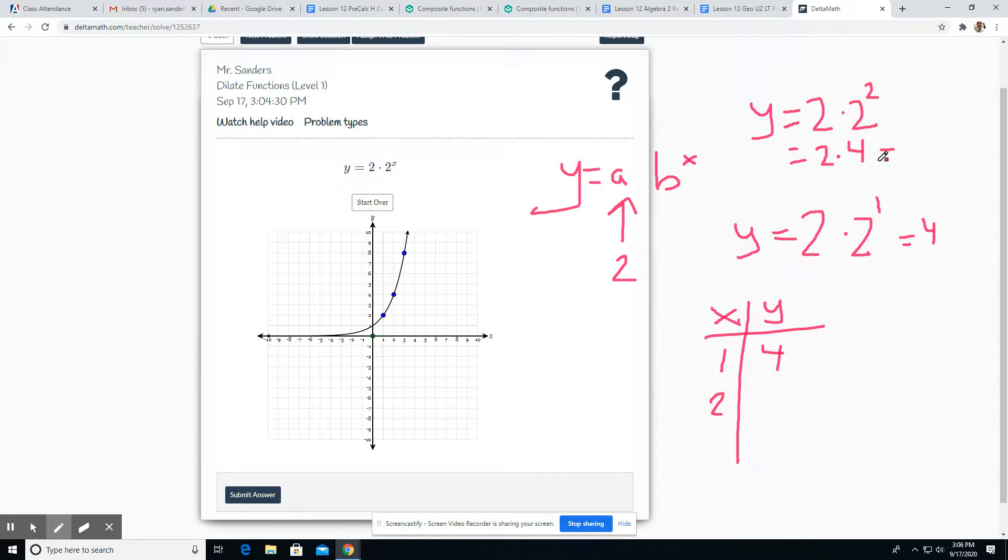is 4, so this output is now 8. Alright, that should give us enough, usually one is what we need but we'll see. So when we have plugged in 1 the output is now 4 and notice